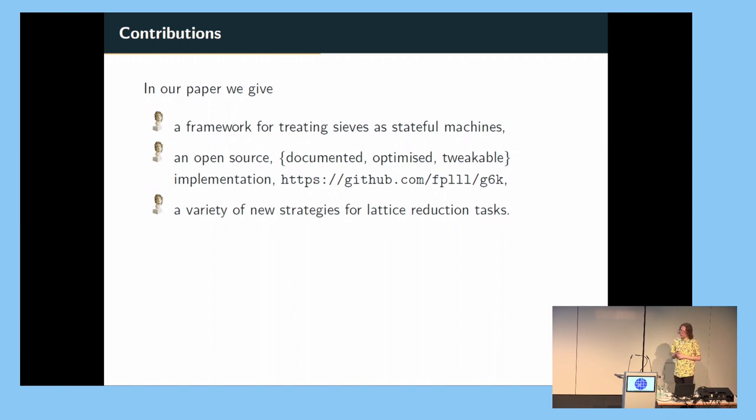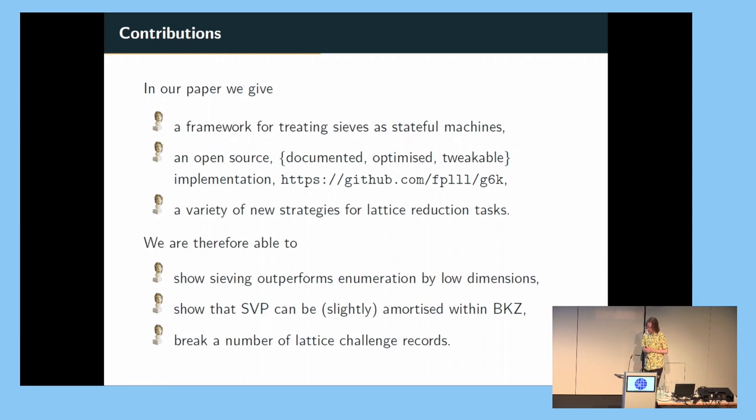We come up with a framework for treating sieves as stateful machines and describe some instructions that we think are useful. And then we implement an open source version of this, which we encourage you to take a look at. Well, really, this is a lie, because these two steps happen the other way around. And then, given those things in hand, we decide that we want to come up with a variety of strategies for cryptanalytic tasks that somebody might be interested in. And then having done that, we're able to show some interesting practical things. For example, we show that in reasonably low dimensions, the asymptote of the time complexity of sieving kicks in, and we're able to solve that exact variant of the shortest vector problem quicker than enumeration, which is something a little new. In our paper, we're able to show that this problem of solving the shortest vector problem is something we can amortize within a very useful lattice reduction algorithm, and we go on to break a number of records. And so, may I introduce to you today, ladies and gentlemen, the general sieving kernel, or as we call her, Jessica.